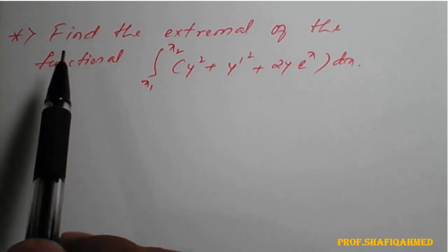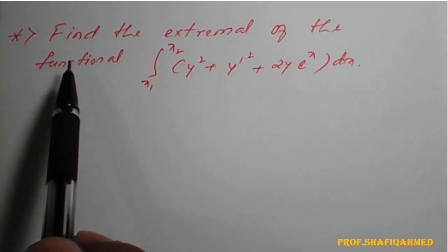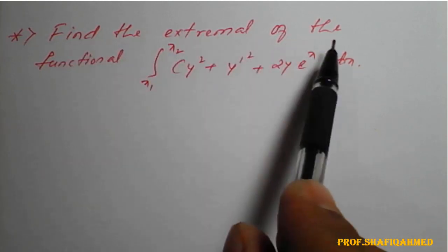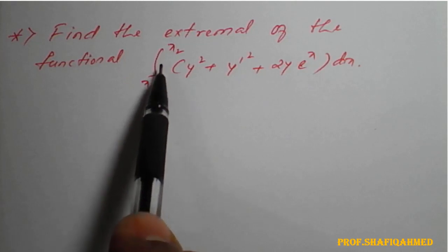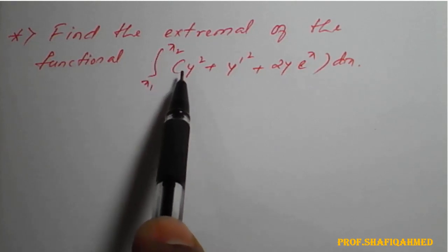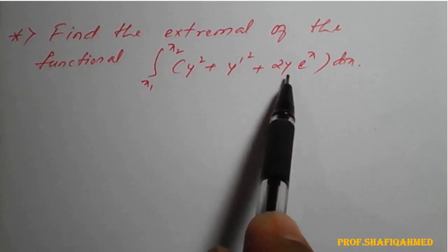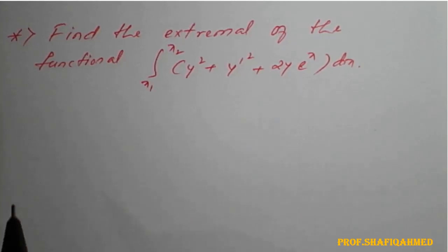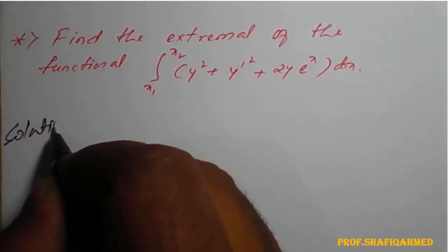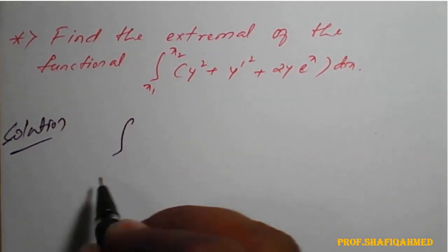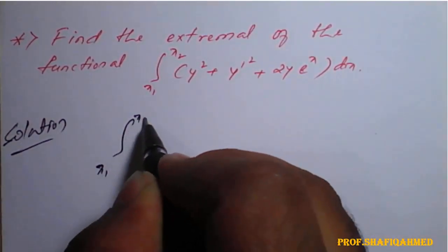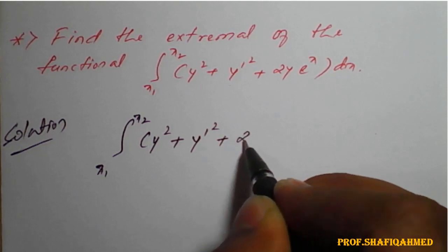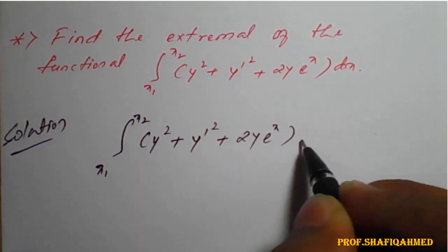Hello students. We will see the problems based on calculus of variation. The problem is: find the extremal of the function integral from x1 to x2 of y squared plus y-dash squared plus 2y times e raised to x, dx.